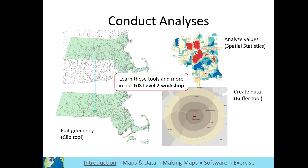However, the real power in GIS comes from the many tools for working with spatial data. Some tools act upon the geometry, such as the clip tool on the far left. In this example, a watershed layer for New England in the United States has been clipped down to the boundary of the state, Massachusetts.